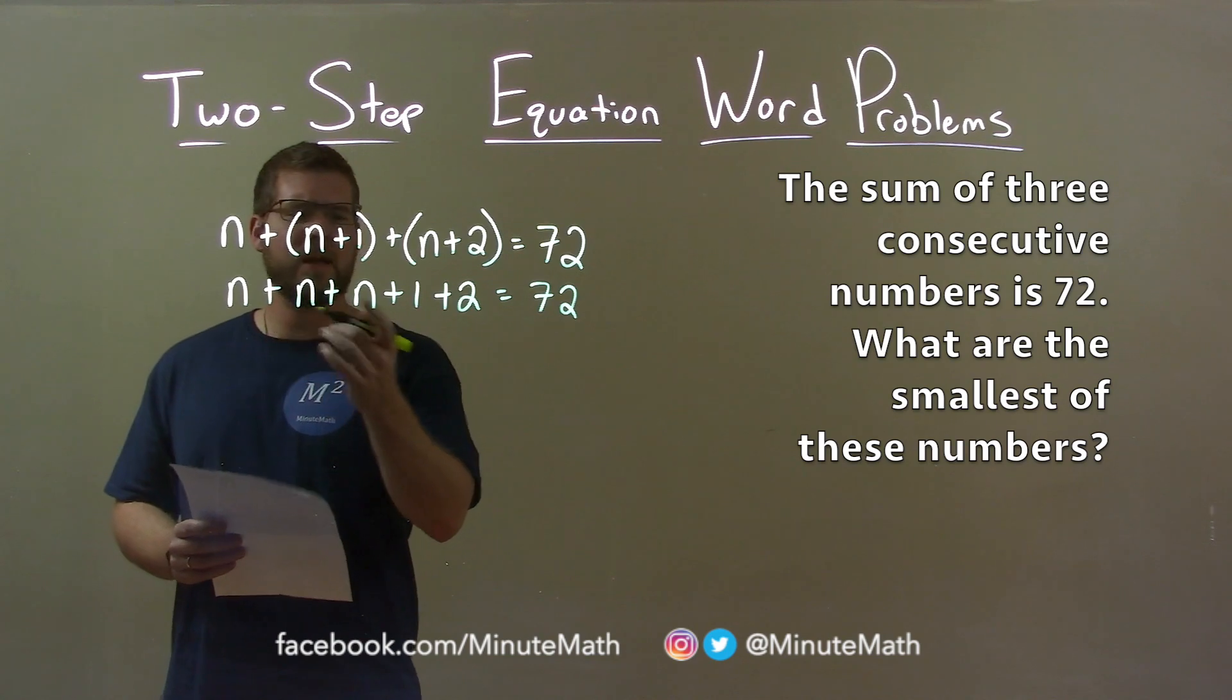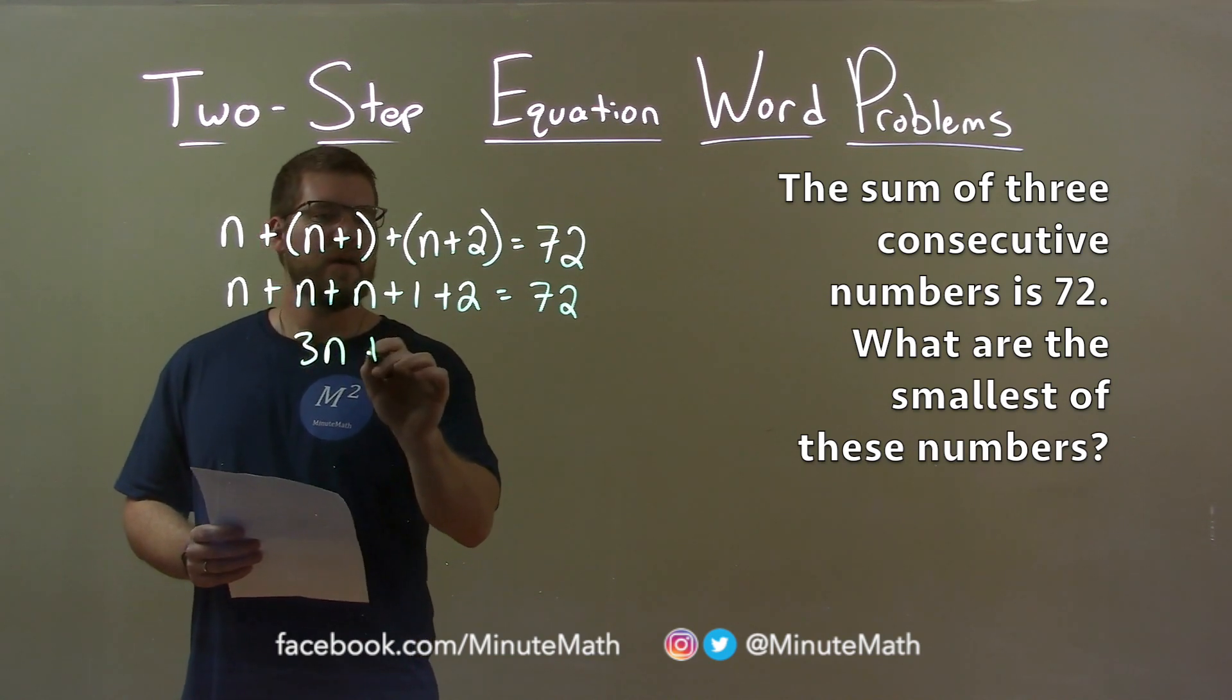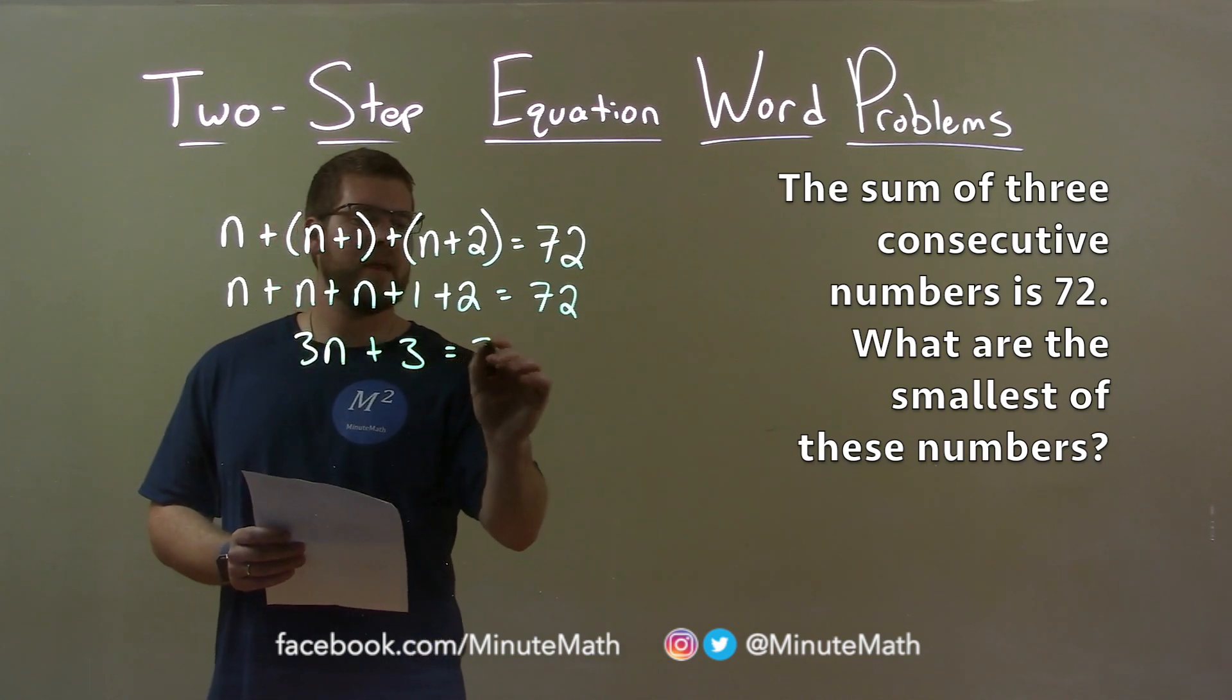n plus n plus n is 3n, and 1 plus 2 is 3, and that equals 72.